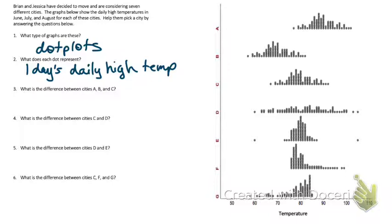Let's look at the first three: A, B, and C. What similarities and differences do you notice? They all have a different high temperature — all different all-time highs. They're basically the same graph, just shifted. So this data is probably made up because they're literally the same shape, just shifted. We're focusing on the fact that their center or average is different.